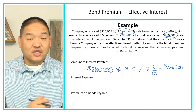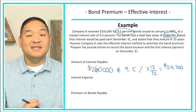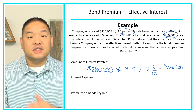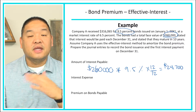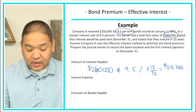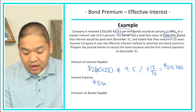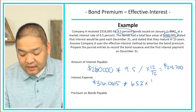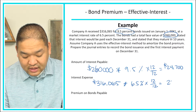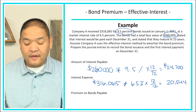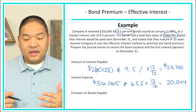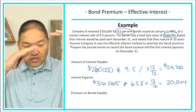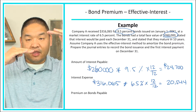Now the question is: what's our interest expense? For interest expense, we take the carrying value and multiply it by the market interest rate. Since we're making the first payment here, the carrying value is what we actually received when we first issued the bond: $316,065. We multiply this by 6.5% times 12/12, and that gives us $20,544. Notice that the interest expense is lower than the interest payable, which is what we would expect — we're using some of the bond holders' money to pay down that interest payable.